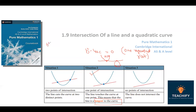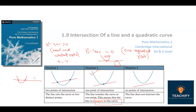When b squared minus 4ac equals zero, the line is tangent to the curve. When b squared minus 4ac is greater than zero, this means there are real and distinct roots — two distinct roots — so there are two points of intersection. The line cuts the curve at two distinct points.